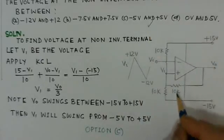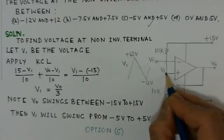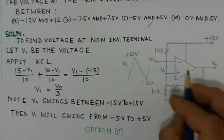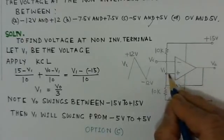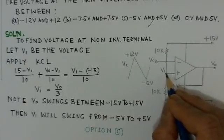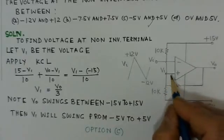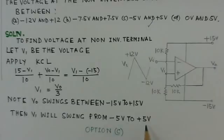So the solution is that the option C here which corresponds to swing of minus 5 volts and plus 5 volts at the terminal of the Schmidt trigger, which is the non-inverting terminal. It's minus 5 volts to plus 5 volts. So this is the option C is the correct choice. Thank you.